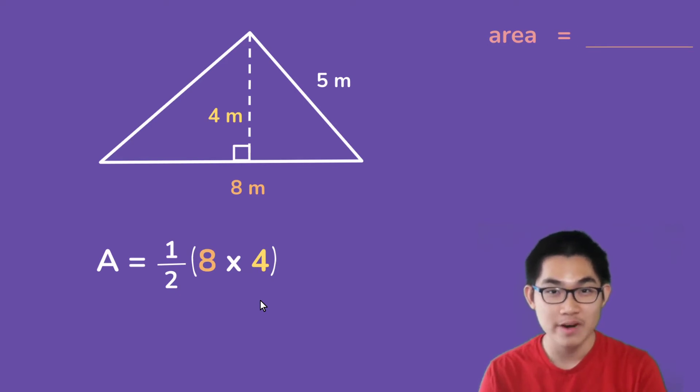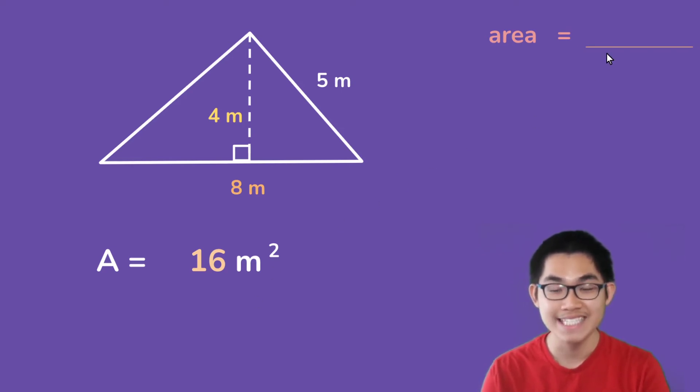And so 8 times 4 gives you 32. And 32 divided by 2 gives you 16 meters squared. And so the area of this triangle is 16 meters squared.